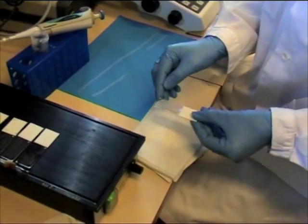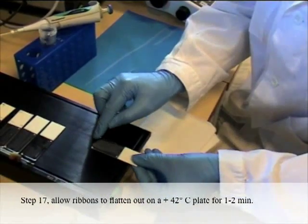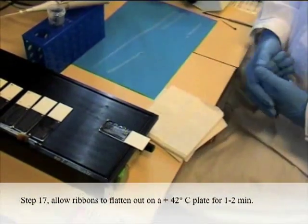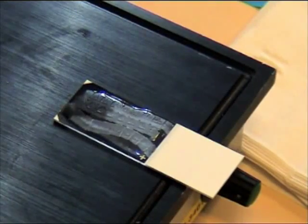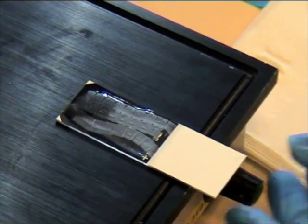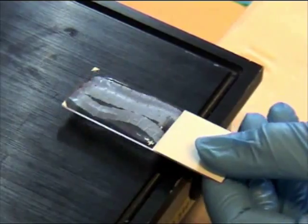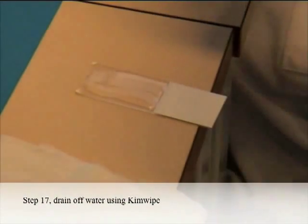Move the slides to the hot plate. Step 17: Allow ribbons to flatten out on a 42 degrees centigrade plate for 1-2 minutes. Drain off the water using Kim Wipe.